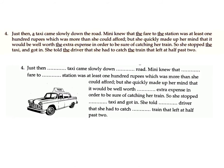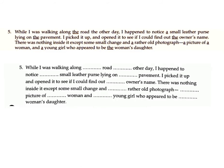Paragraph 4: 'Just then a taxi came slowly down the road. Mary knew that the fare to the station was at least 100 rupees, which was more than she could afford, but she quickly made up her mind that it would be well worth the extra expense in order to be sure of catching her train. So she stopped the taxi and got in. She told the driver that she had to catch the train that left at half past two.'